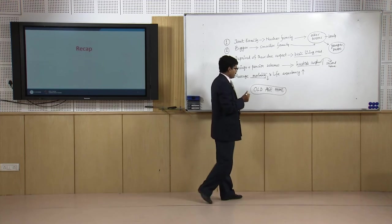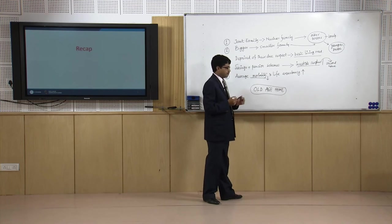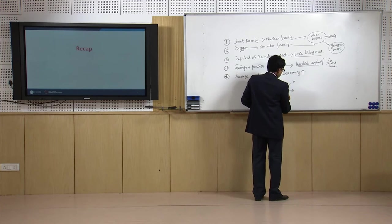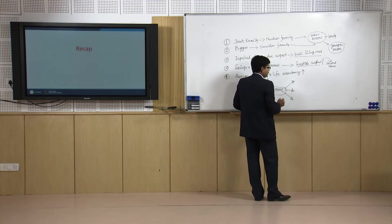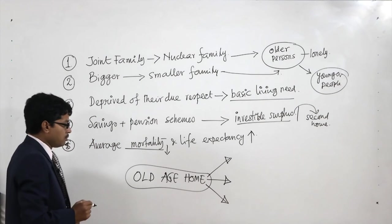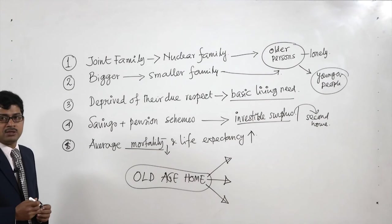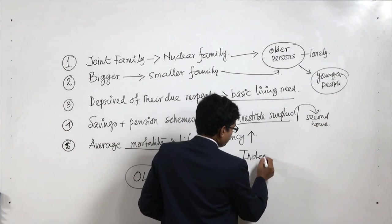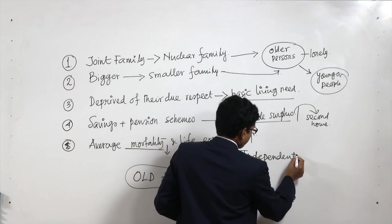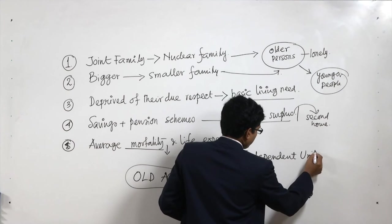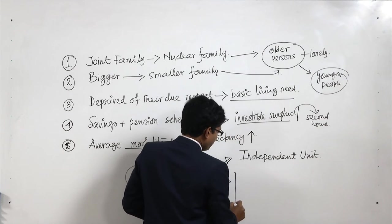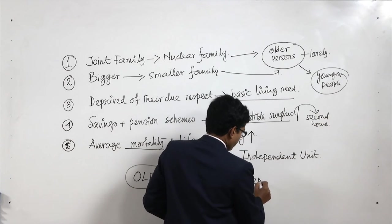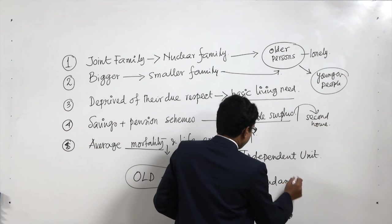This old age home is a different type of home which can be designed differently, because there could be three different categories of old age home based on their capacity. Old age homes should have additional facilities for old age people. One could be the independent unit, and based on the degree of dependency, another could be a dependent unit.